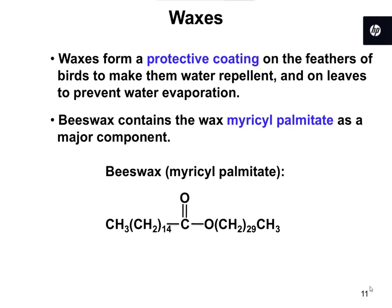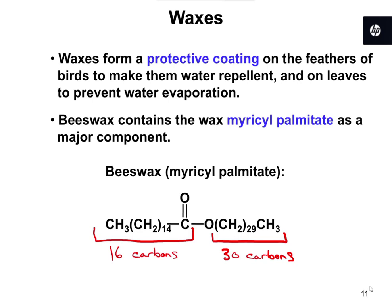Beeswax is, in the name, a wax. You can see here the structure of beeswax, also known as merissile palmitate. This part is a 16-carbon chain — the 14 carbons in parentheses plus the extra 2 makes 16 — so the original carboxylic acid was 16 carbons long. The alcohol part is 30 carbons. Beeswax is formed from the combination of a 16-carbon carboxylic acid and a 30-carbon alcohol, put together to make a really large ester, which we call a wax.